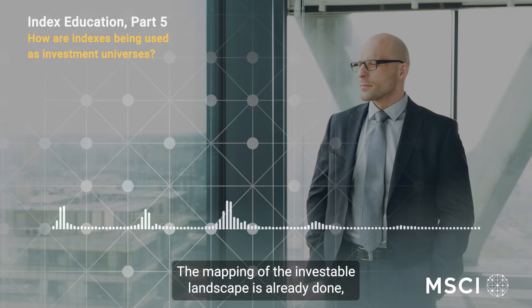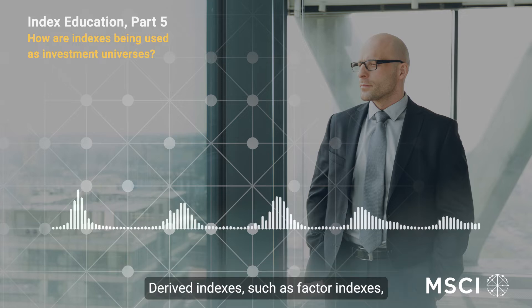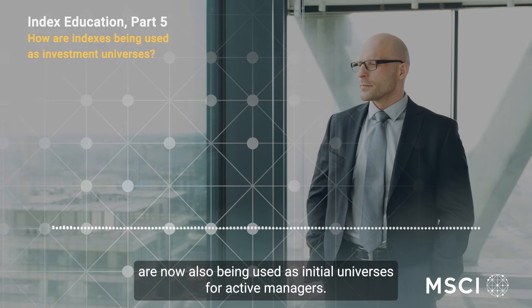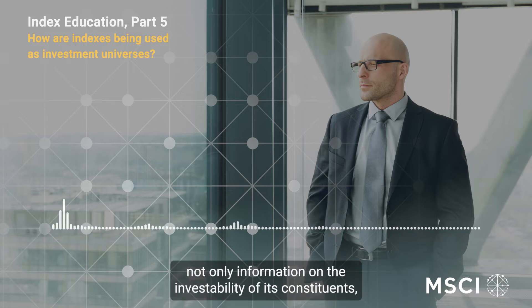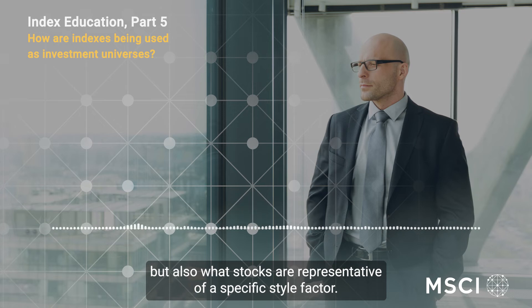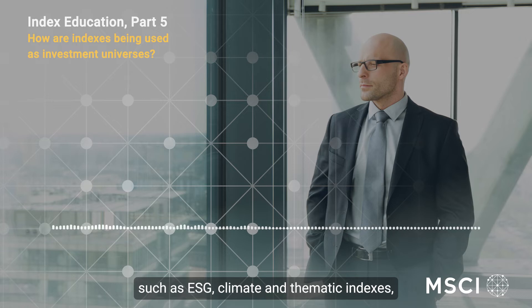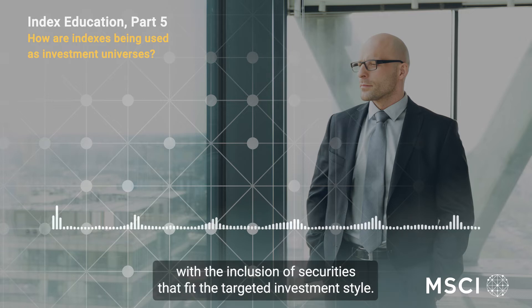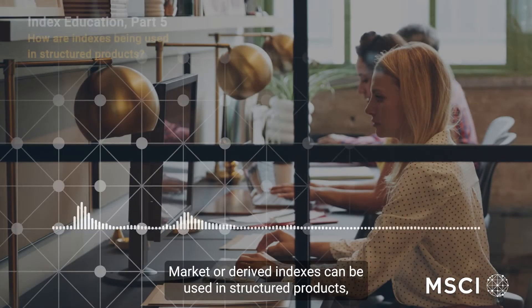The mapping of the investable landscape is already done, so active managers can focus resources and attention on the implementation of their investment process. Derived indexes such as factor indexes are now also being used as initial universes for active managers. In the case of factor indexes, the index incorporates not only information on the investability of its constituents but also what stocks are representative of a specific style factor. A similar situation would apply to other derived indexes such as ESG, climate, and thematic indexes, with the inclusion of securities that fit the targeted investment style.